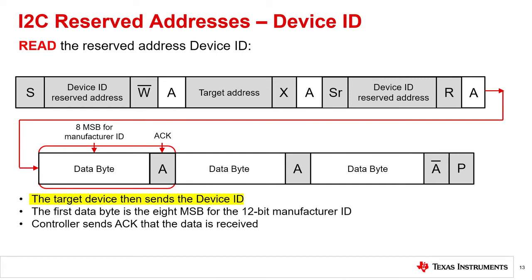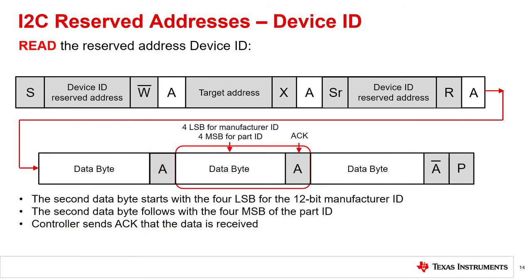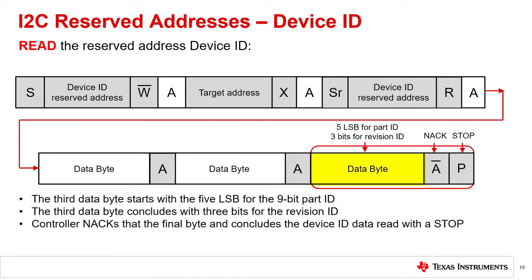The target device then sends three bytes for device ID. The first byte gives the eight MSBs of the 12-bit manufacturer ID. The controller then acknowledges the receipt of this byte. The target device then sends the second byte for device ID. The four MSBs of the byte are the four LSBs of the manufacturer ID. The four LSBs of the byte are the four MSBs of the part identification. The controller acknowledges the receipt of the second byte. The target device finally sends the third byte for device ID.